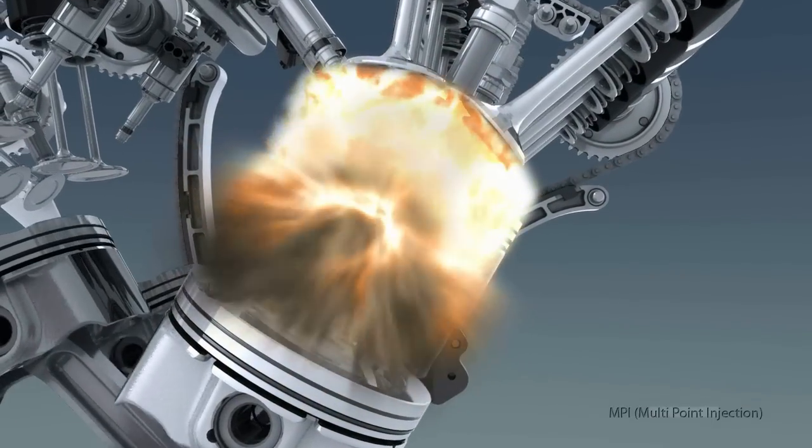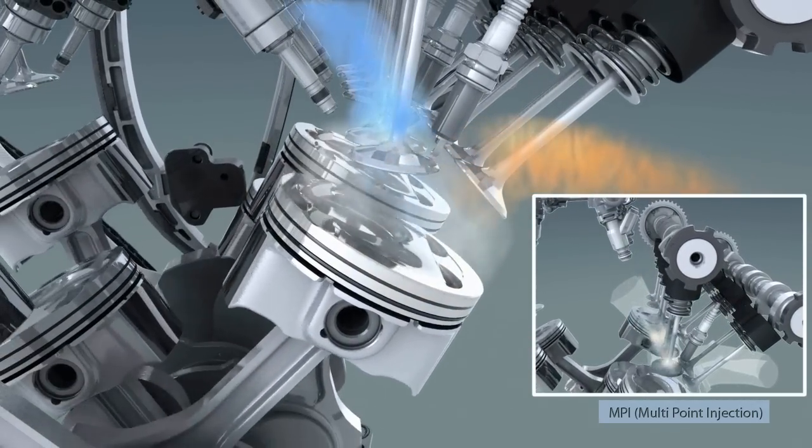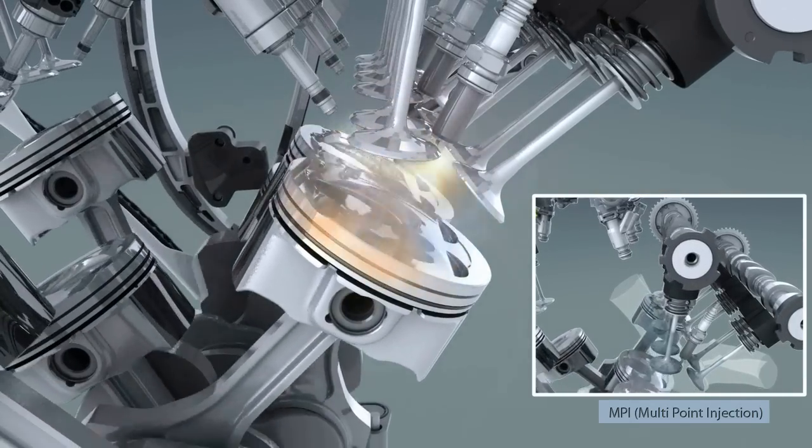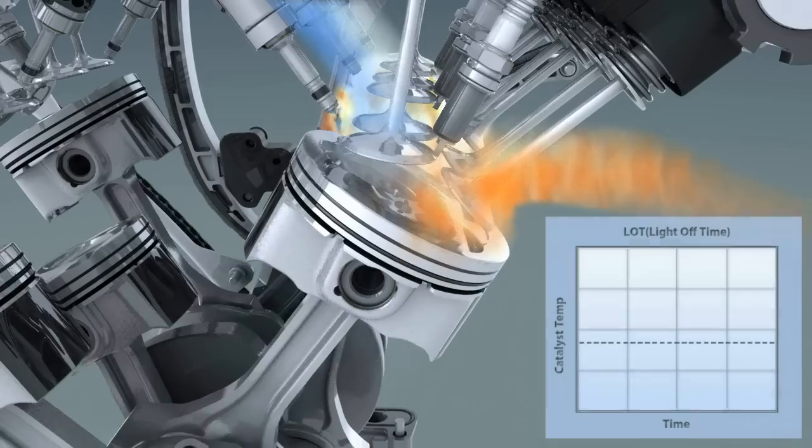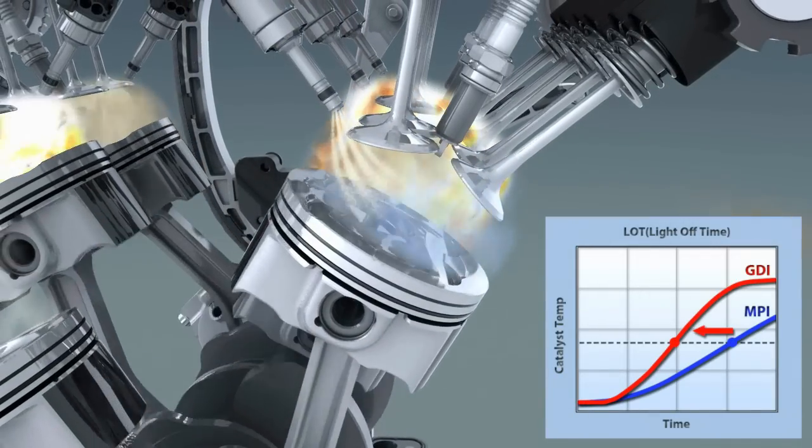Current MPI systems inject fuel into the intake port. The stratified fuel around the spark plug improves startability by enhancing combustion stability. Split injection increases exhaust energy and shortens the catalyst light off time. Exhaust gas emissions are thus reduced.